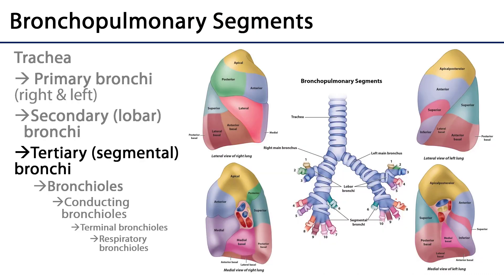Those secondary bronchi are going to multifurcate into tertiary bronchi, often called segmental bronchi. Segmental bronchi supply an air passage to various bronchopulmonary segments. These are surgically resectable segments that have their own air pathway as well as their own arteries from the pulmonary loop — branches of pulmonary arteries — coming out to supply them.